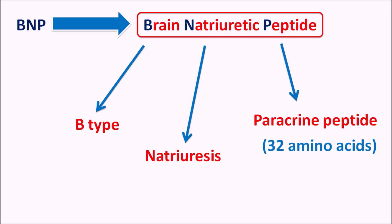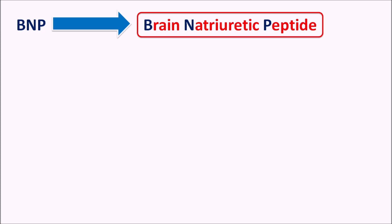Generally it is released as a pro-hormone which is then converted into the active hormone form, resulting in increased natriuresis. These natriuretic peptides are of three types: the first one is ANP, the second one is BNP, and the third one is CNP.